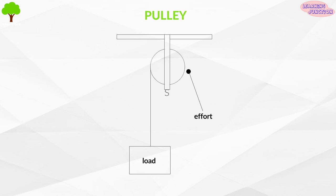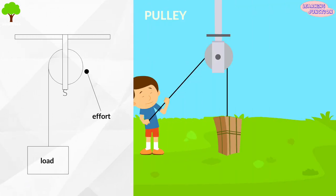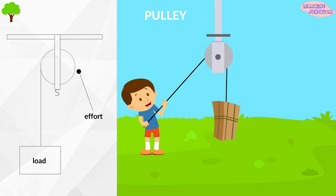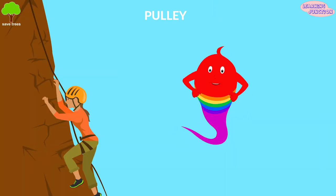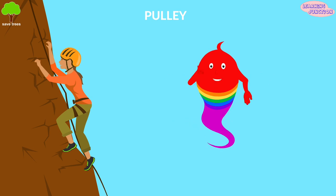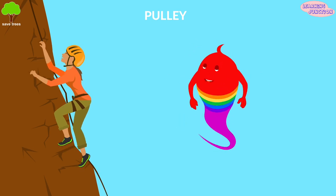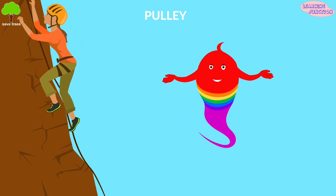Pulley. A pulley is simply a wheel with a groove in it and a rope in the groove. It is used to lift up or lower heavy objects. With the help of the pulley system, rock climbers can climb steep rock surfaces easily.